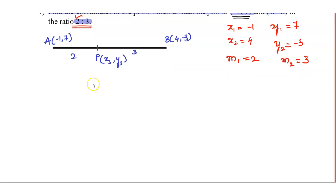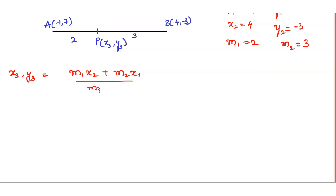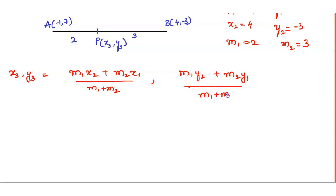If we write it using the section formula: x3, y3 equals (m1·x2 + m2·x1) / (m1 + m2), comma, (m1·y2 + m2·y1) / (m1 + m2).